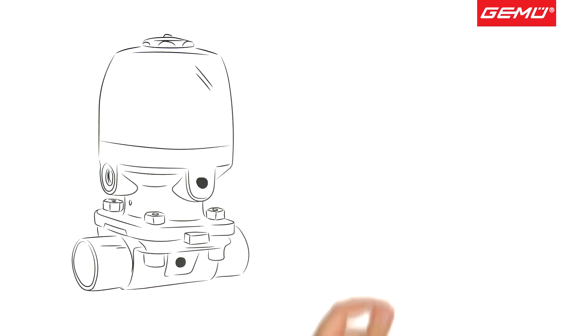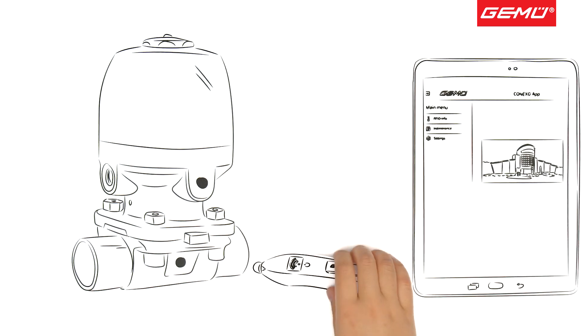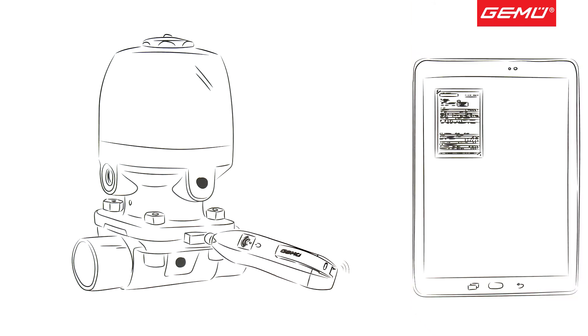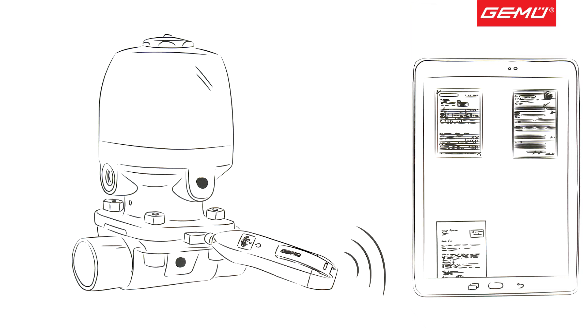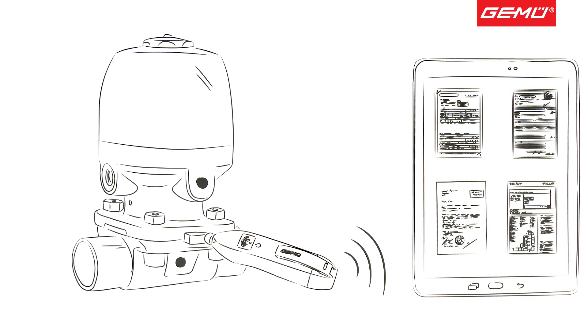With the aid of a reader, the GEMU Conexo pen and the GEMU Conexo app, all this information and documents like data sheets, certificates, installation and operating manuals can be retrieved and displayed quickly and easily, directly in the facility.